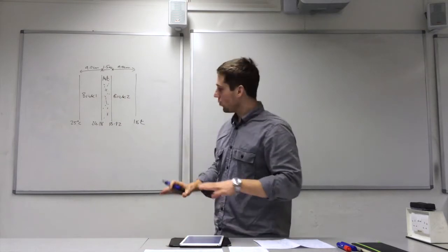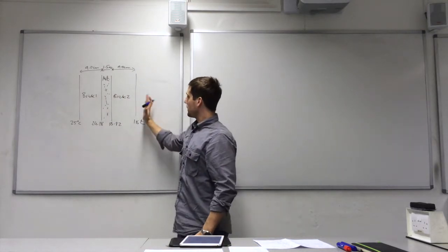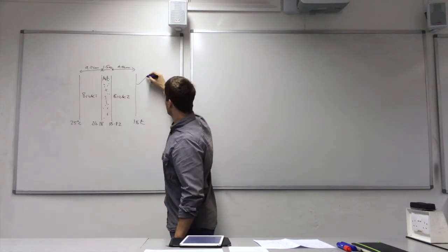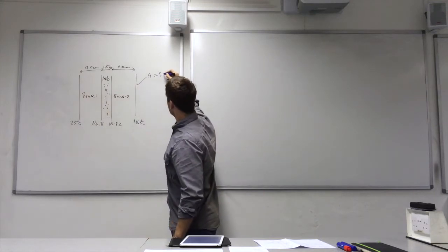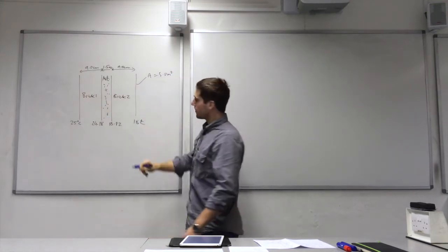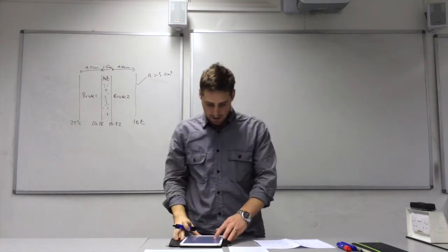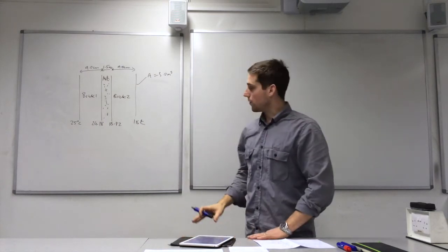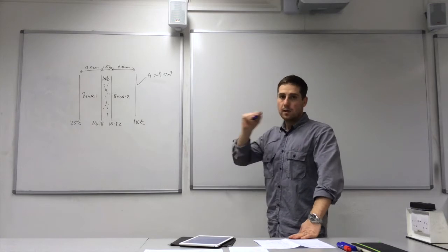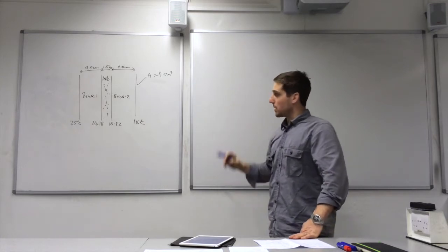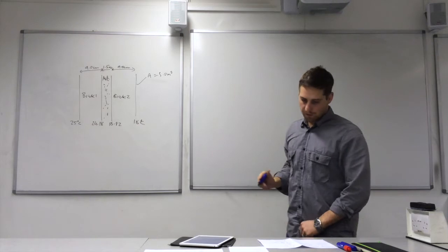So those are our temperatures at each of the surfaces there in our wall. The wall has a surface area facing each side of 5 m². Now what we're going to do for our wall is calculate the rate of heat transfer through there by conduction.